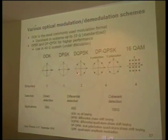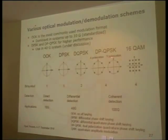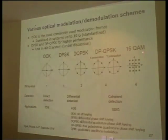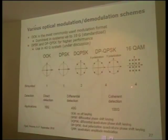DQPSK — Q means quadrature PSK — uses four phase points, so the bit-per-symbol rate increases by 2 bits. Dual polarization QPSK multiplexes two DQPSK signals in polarization division, giving 4 bits per symbol. You can also have 16-QAM, using both amplitude and phase for 4 bits per symbol, though it is not yet common in optical systems. In wireless systems, 16-QAM and 64-QAM are very common.